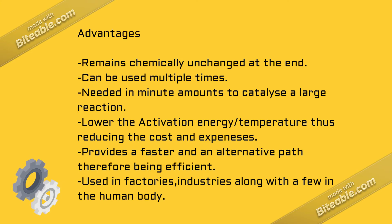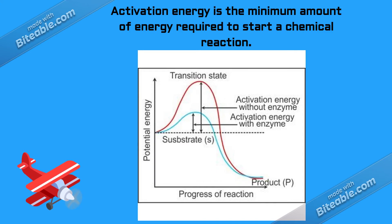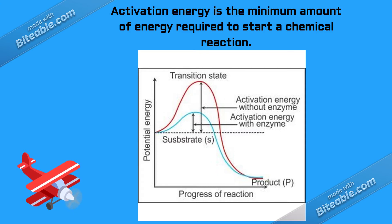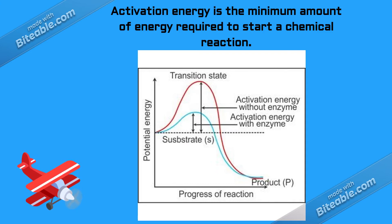When I say enzymes lower the amount of energy needed, what I mean is that they lower the amount of activation energy. Activation energy is the minimum amount of energy required to start a reaction — the minimum energy required to give a kickstart to any reaction and enable the movement of atoms or molecules. This part of the reaction requires a lot of energy in the form of heat, involving electricity usage and a lot of money, especially in industries or factories. Looking at the graph, the red curve shows the reaction without the enzyme takes longer, and the blue curve shows the reaction with the enzyme happens at a faster rate.